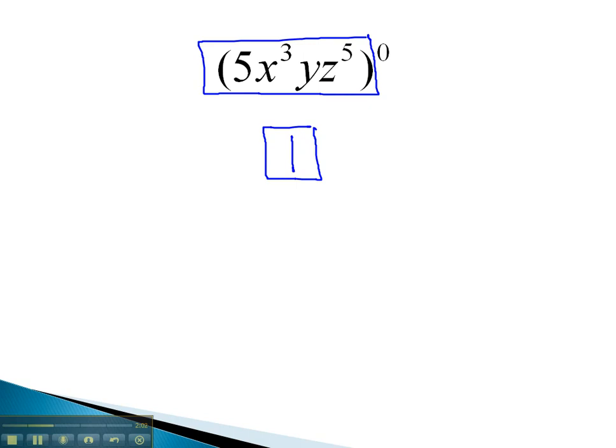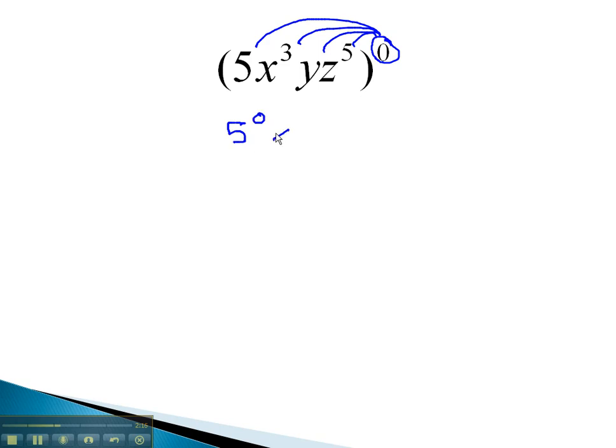We could have done this problem by using the power rules first and distributing, or putting that 0 onto each factor. That would give us 5 to the 0, x to the 3 times 0 which is 0, y to the 0, z to the 5 times 0 which is 0.